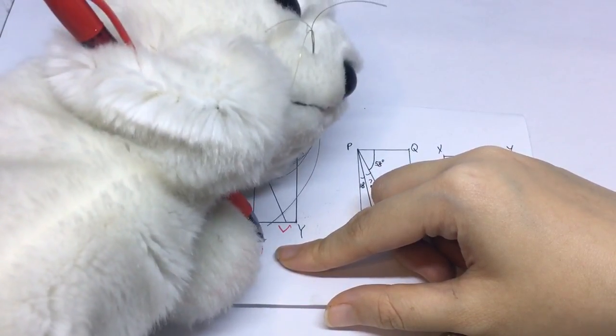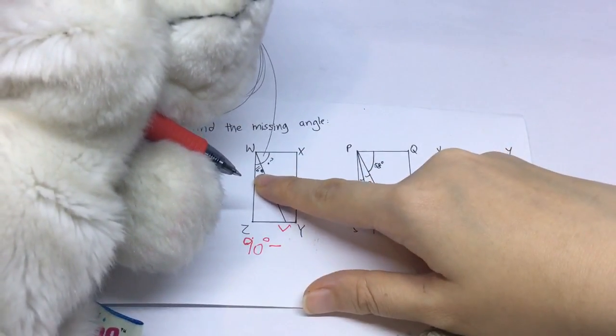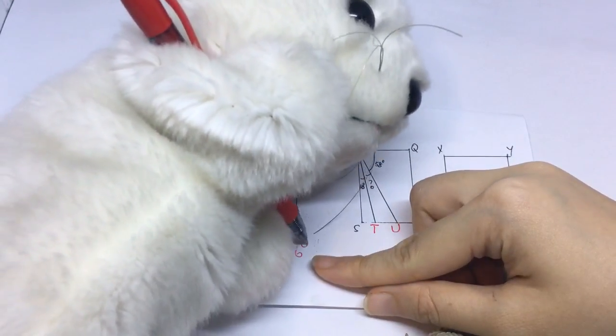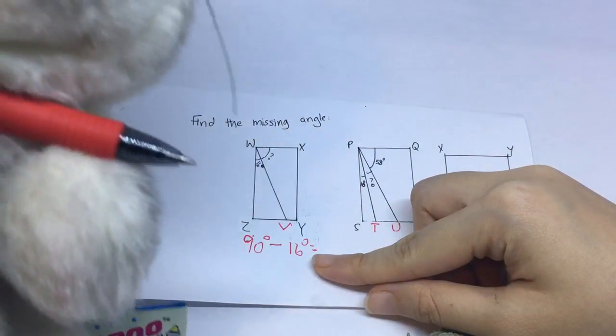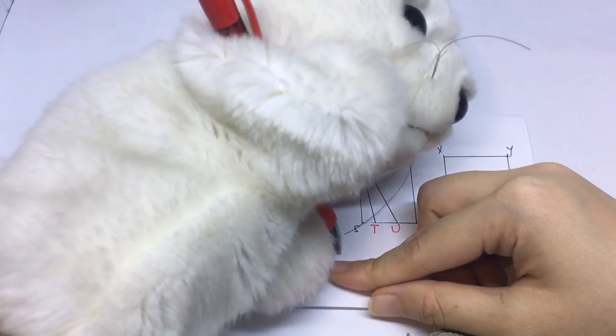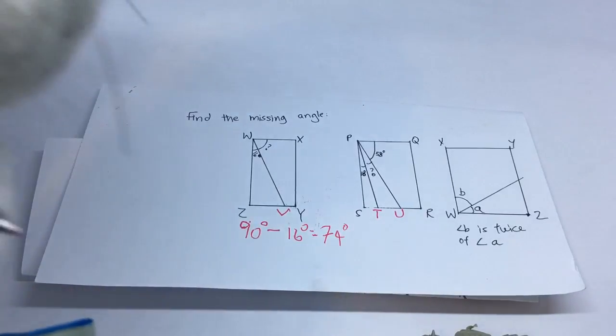And write degrees. Degrees! Minus. Minus how many? Sixteen degrees. Ninety degrees. And what do you get? Seventy-four degrees. Yes. You get seventy-four degrees.